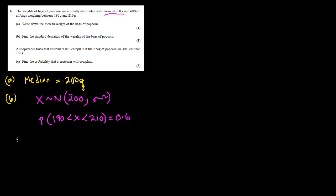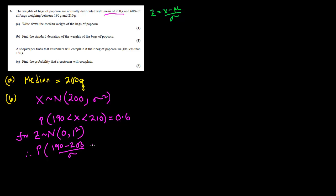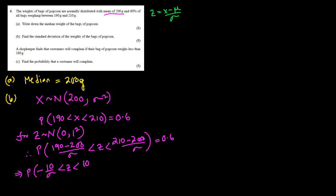The first thing we do is convert into the unit-free standard normal distribution using the z-score. The z-score formula is: z equals the random variable minus the mean, divided by sigma. So this becomes (190 − 200)/σ and (210 − 200)/σ, giving us −10/σ and +10/σ, and this probability is 60%.